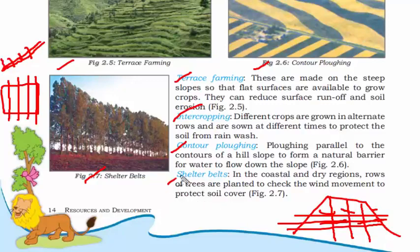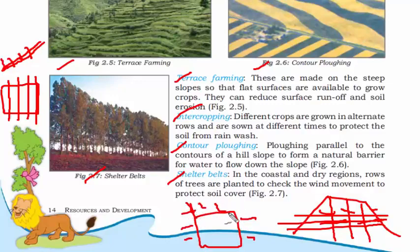The last method is shelter belts. In coastal areas there is a lot of air movement, so you plant tall trees around your land. These trees prevent the wind from carrying away the soil cover.